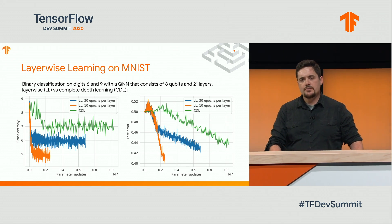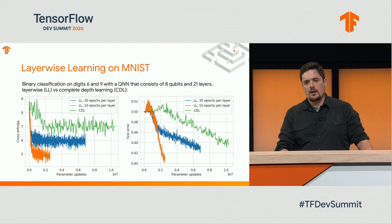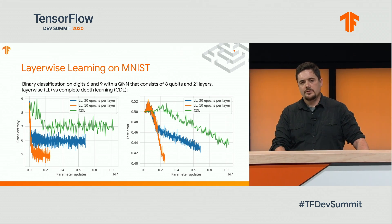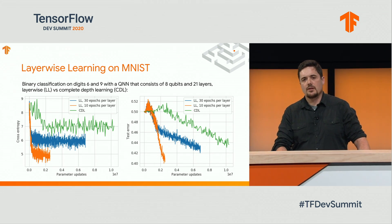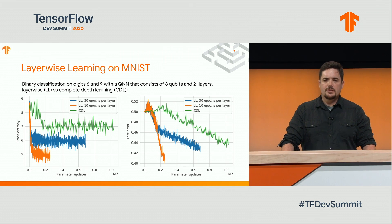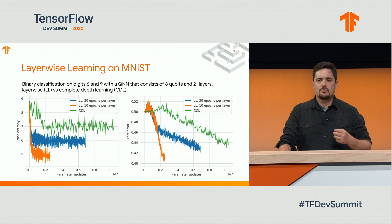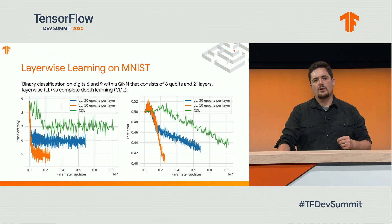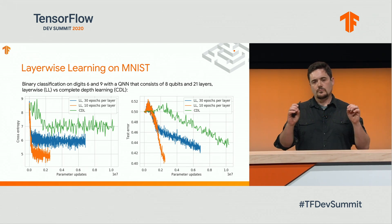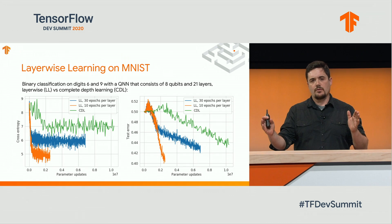When we do this, we find a speed-up in regards to training times, and we also see a performance gain in our test error. When we looked at doing binary classification for the digits 6 and 9 from MNIST, we noticed an advantage when using 10 epochs per layer in doing layer-wise learning over what we call complete depth learning, where we train all of the layers at once.